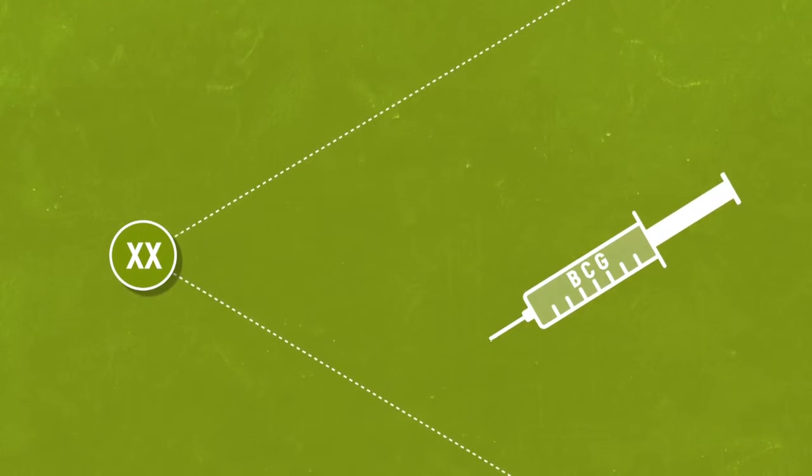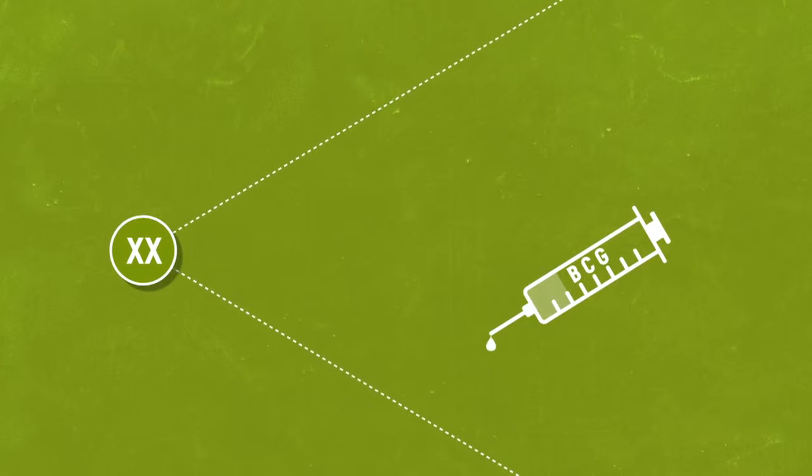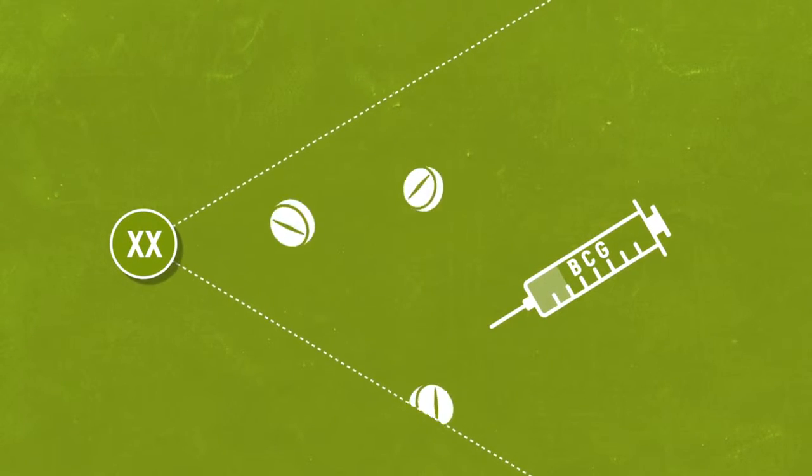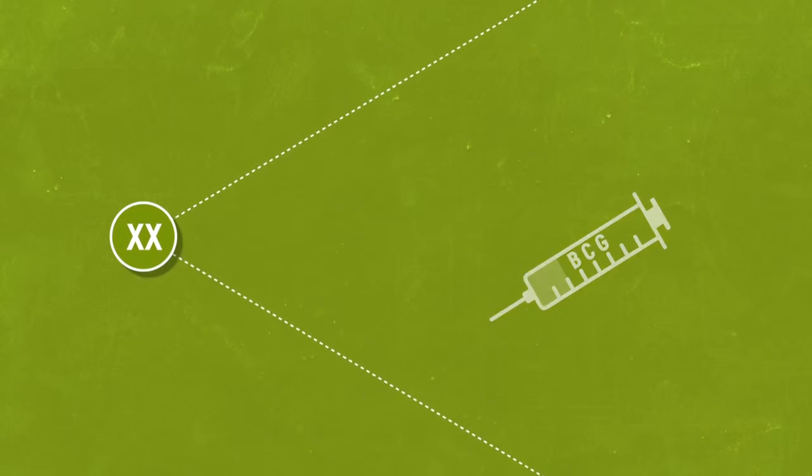It wasn't until the 20th century that the BCG vaccine was developed, and even more importantly, the first antibiotics capable of effectively treating the disease were discovered.